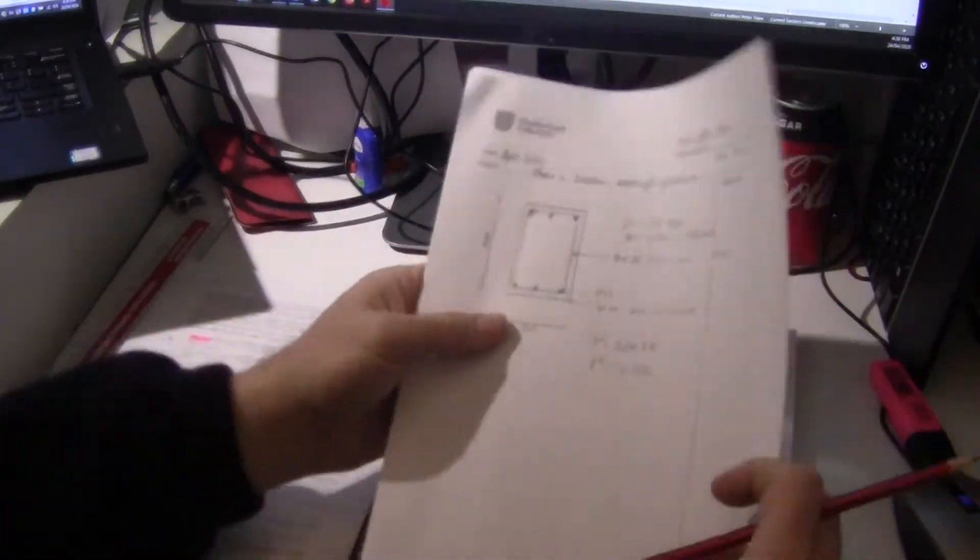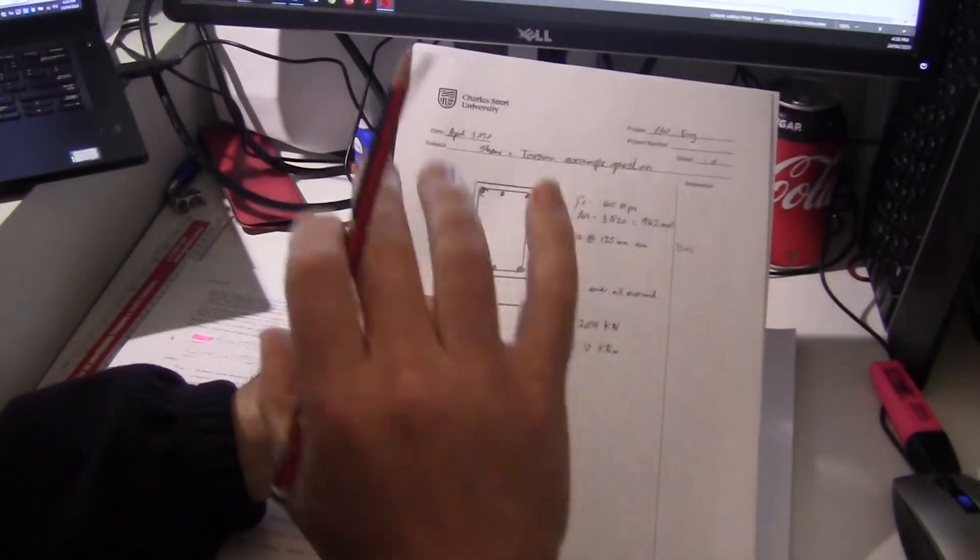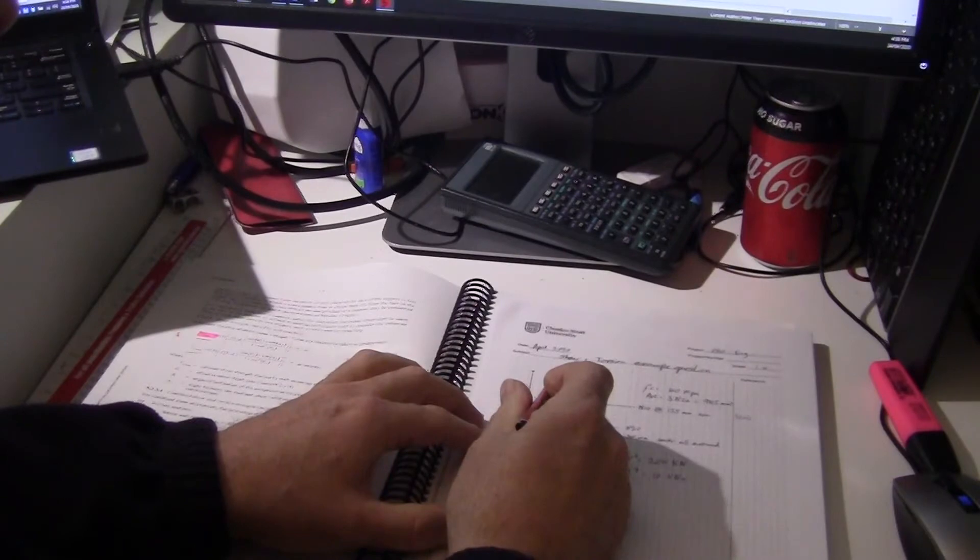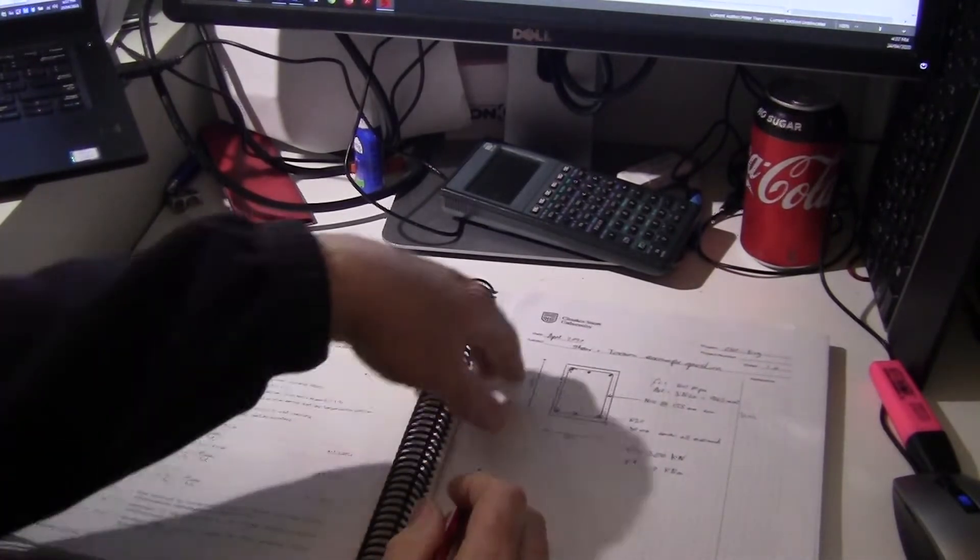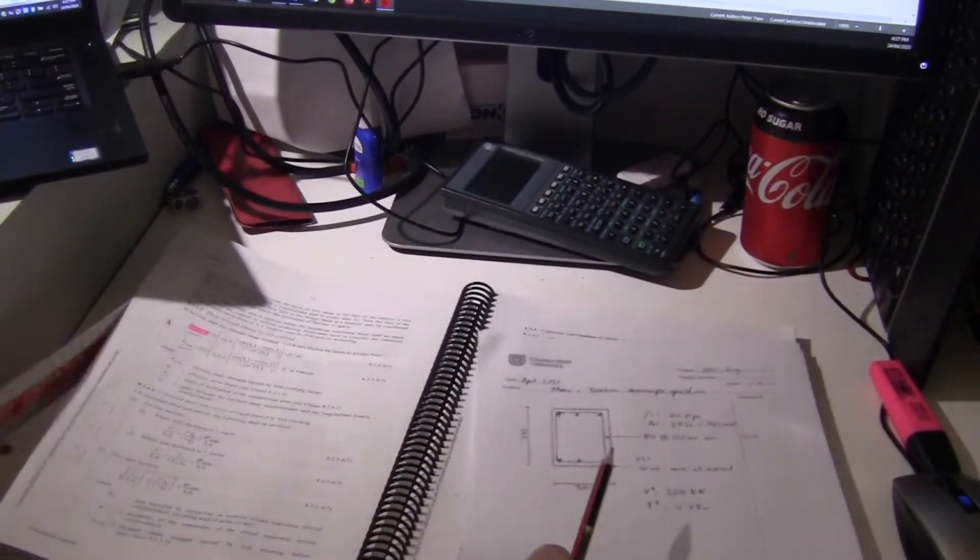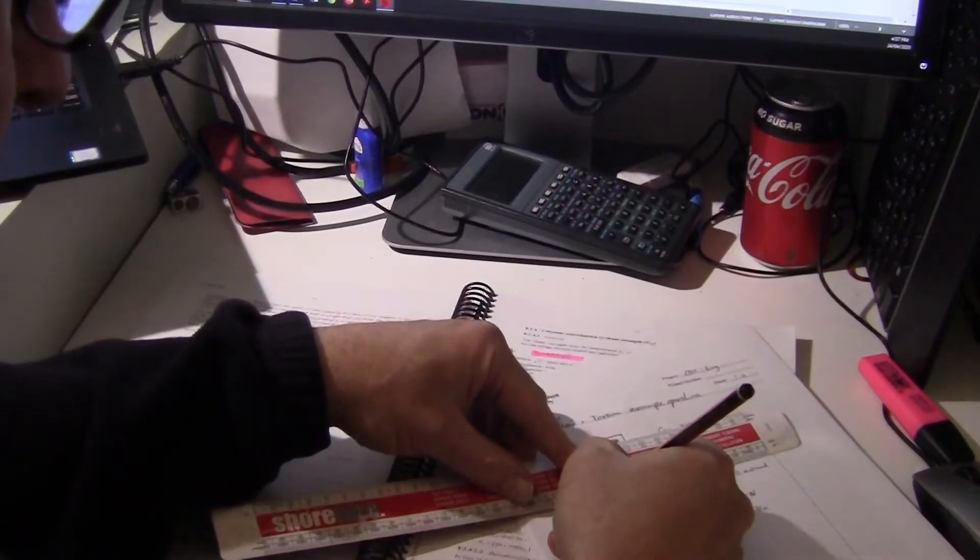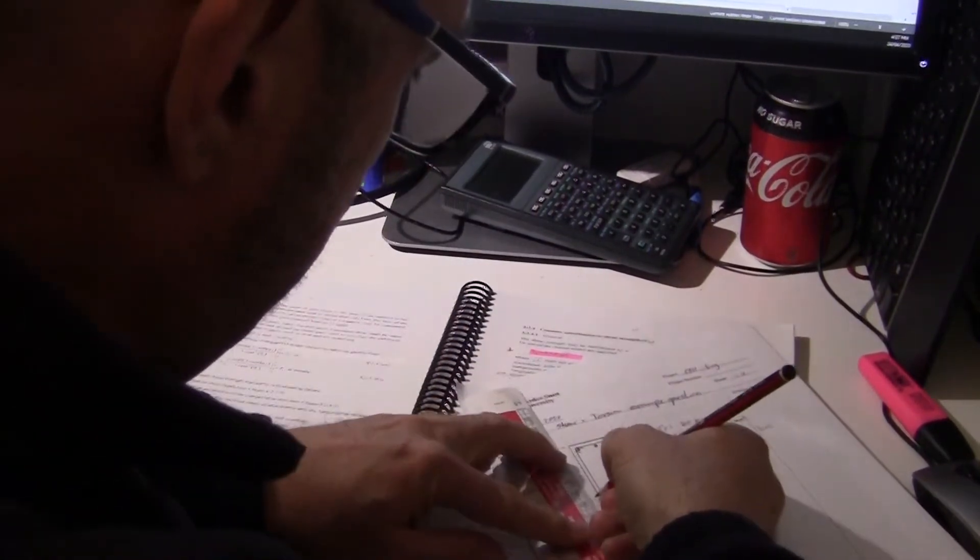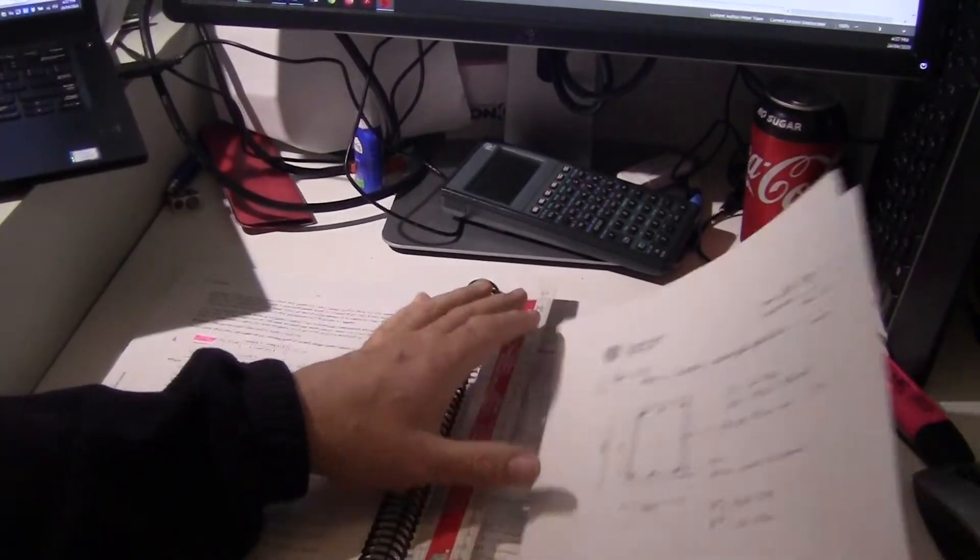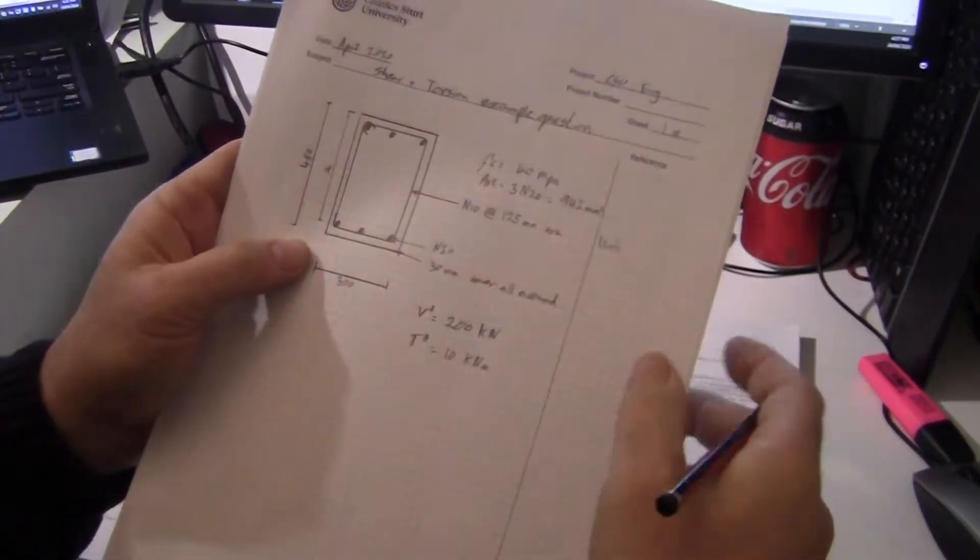So this is our beam. It doesn't really matter how long it is at the moment because we're working out the shear force capacity. So we need to work out a few properties of this first. First, the overall depth of the beam is 450. And I've got a 30mm cover all around. So one of the dimensions we have to work out is the shear depth, DV. Now, you recall that when we're doing bending, the effective depth D is from the top of the beam down to the centroid of those bars there.